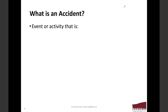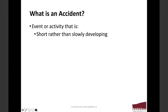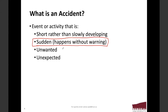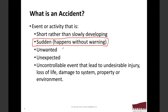Before jumping into accident modeling, it is important to understand what an accident is. An accident has some characteristics: it is an event or activity that is short rather than slow developing. It is sudden and happens without any warning. It is unwanted, unexpected, and uncontrollable when it leads to undesirable injury, loss of life, loss or damage to the system, property, or the environment. As a risk and safety engineer, it is your job to make sure we don't encounter these things.